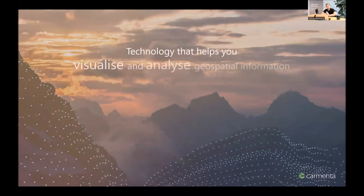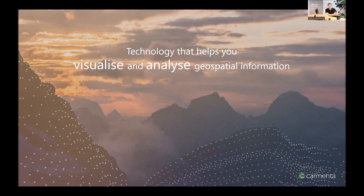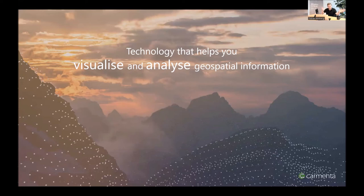Briefly about our geospatial technology: Carmanta is all about creating technology that helps you visualize and analyze geospatial information. When we talk about geospatial information, we're not only talking about maps or static background data — we're also talking about all the dynamic information your application needs to display on top of the map, such as localized units, a tactical scenario with symbols, lines, areas, and geo-referenced video feeds from drones.